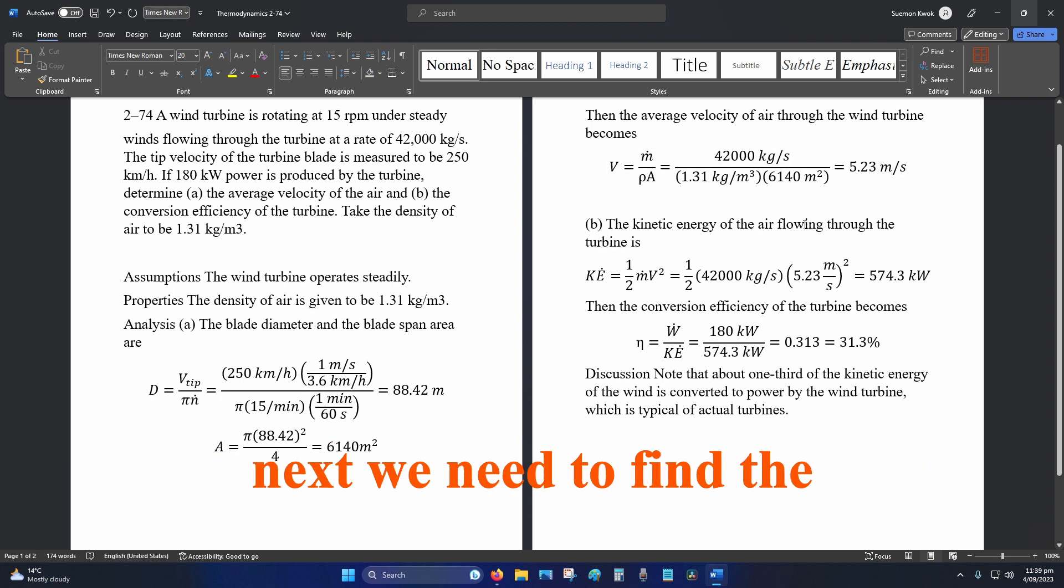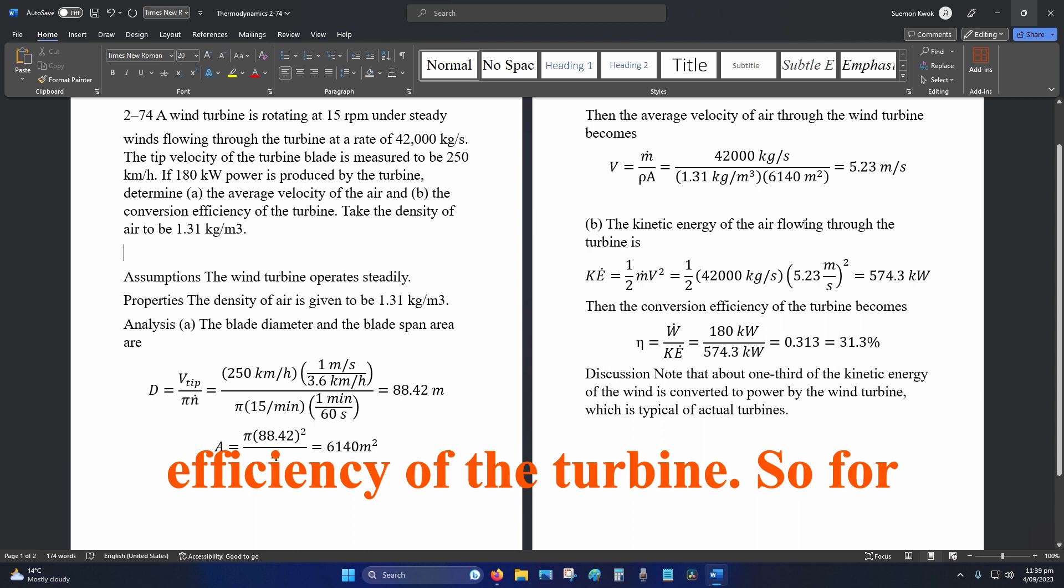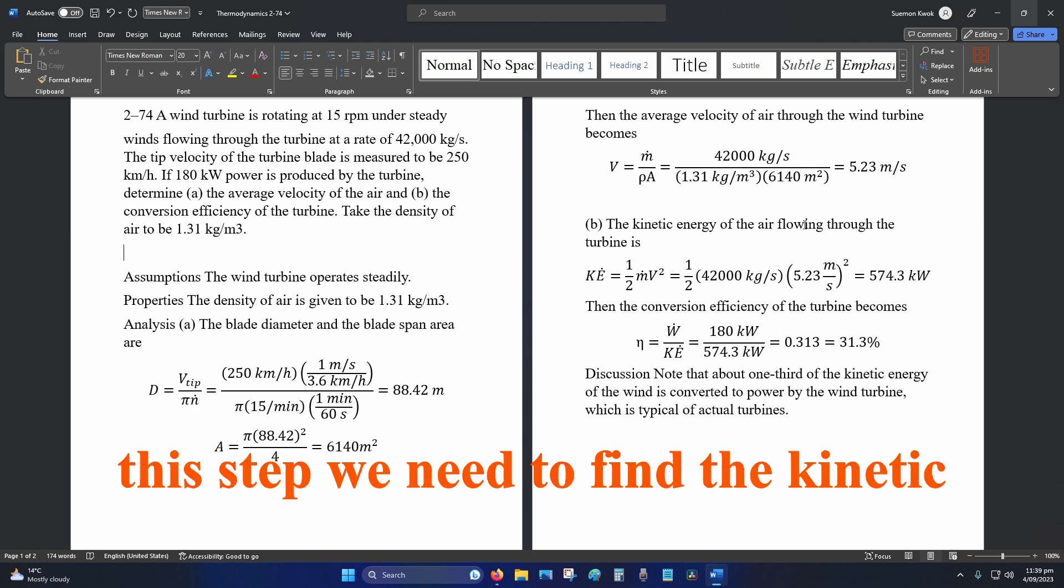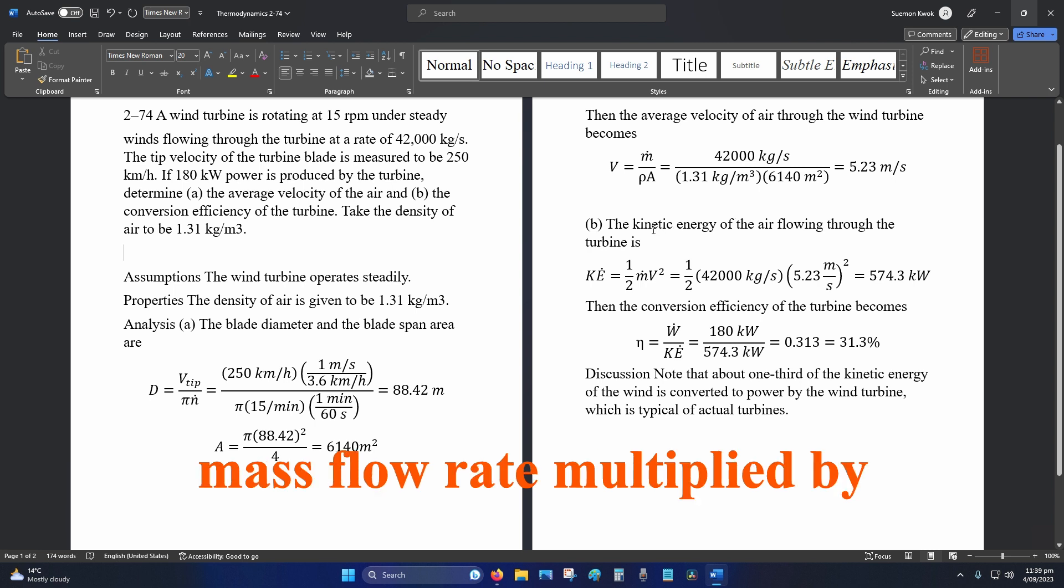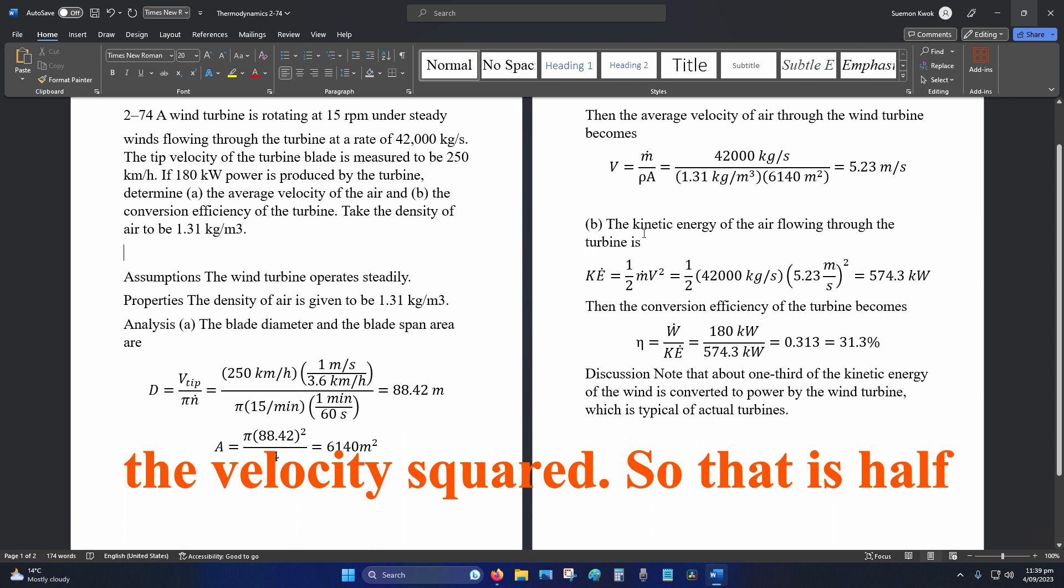Next, we need to find the efficiency of the turbine. For this step, we need to find the kinetic energy, which is half the mass flow rate times the velocity squared.